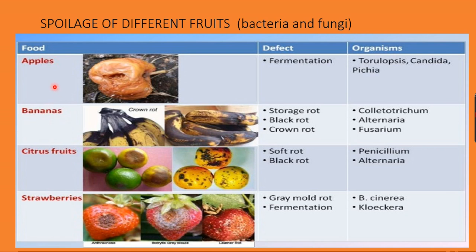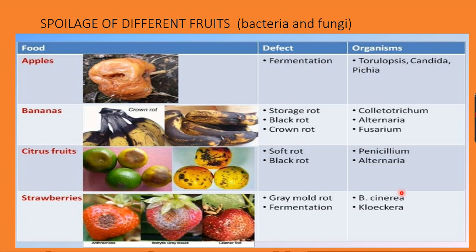Looking at the pictures: apples are fermented by Candida and Torulopsis species; bananas develop crown rot, storage rot, and black rot by different organisms; citrus fruits develop soft rot or black rot due to Penicillium and Alternaria. For strawberries, damage from Alternaria, gray mold from Botrytis cinerea, and other rot types can all be observed in the pictures representing these defects.